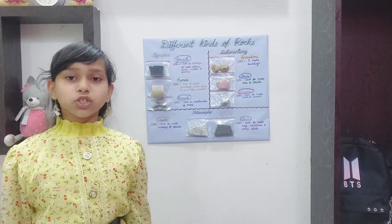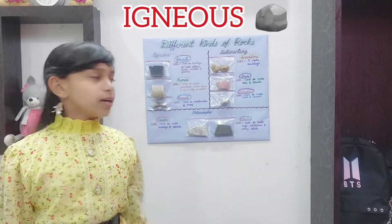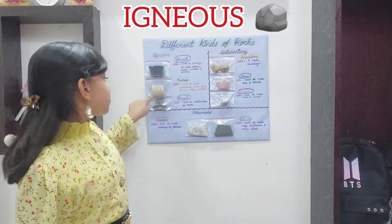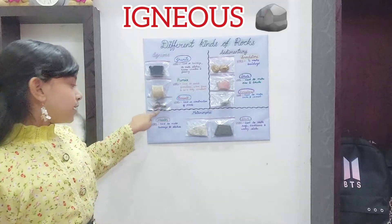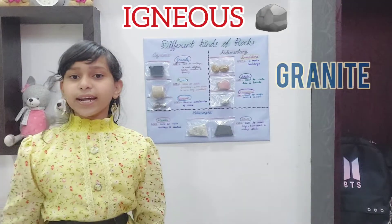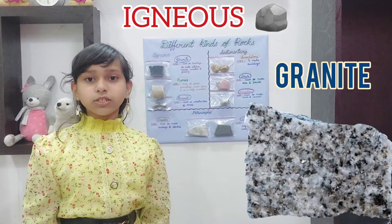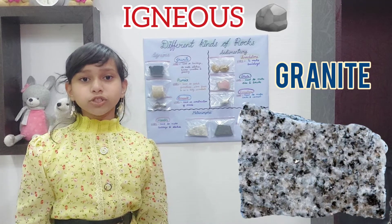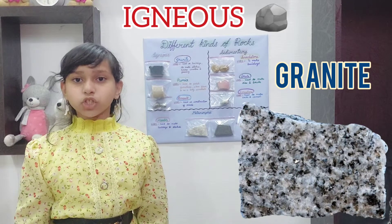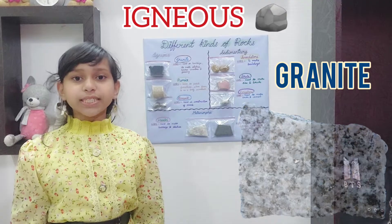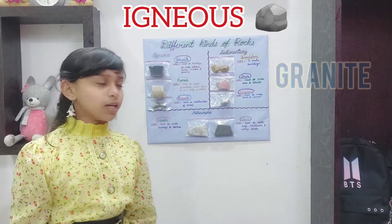Examples of igneous rocks are granite, pumice, and basalt. Granite is used in buildings to make statues, kitchen counters, and flooring.